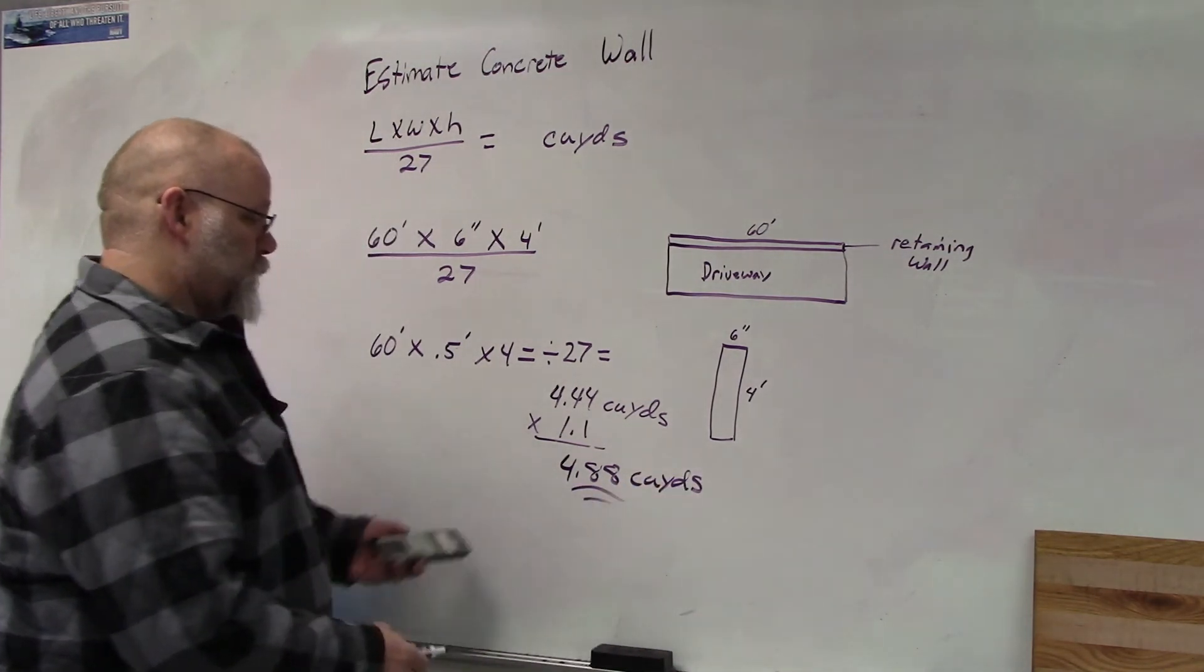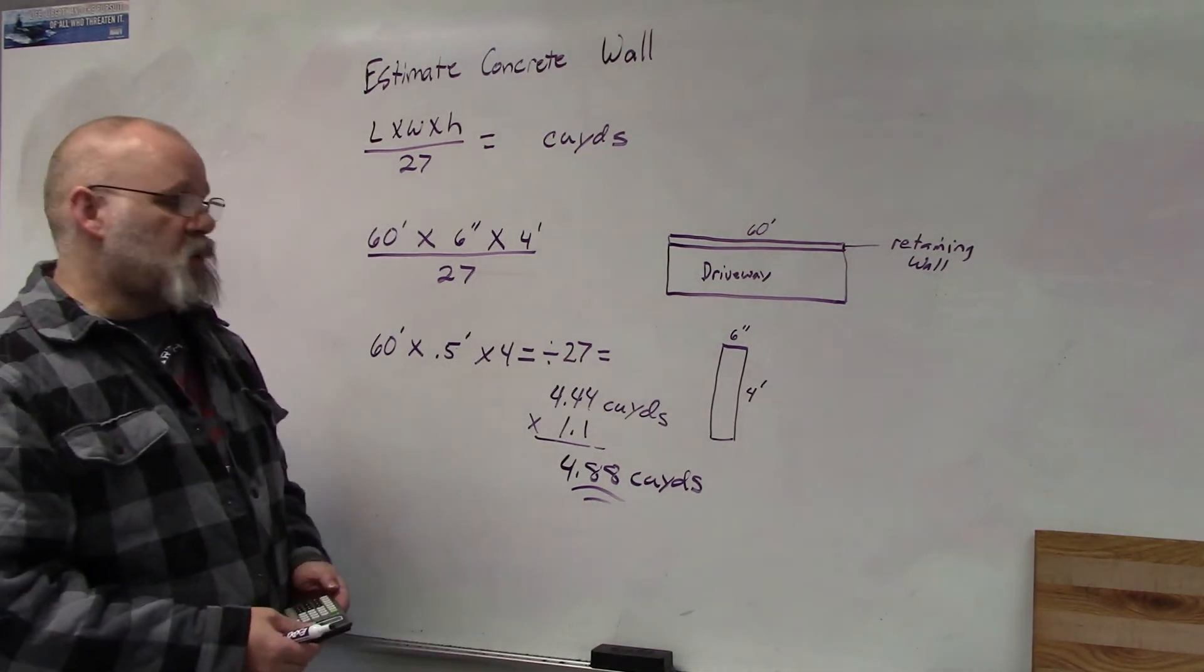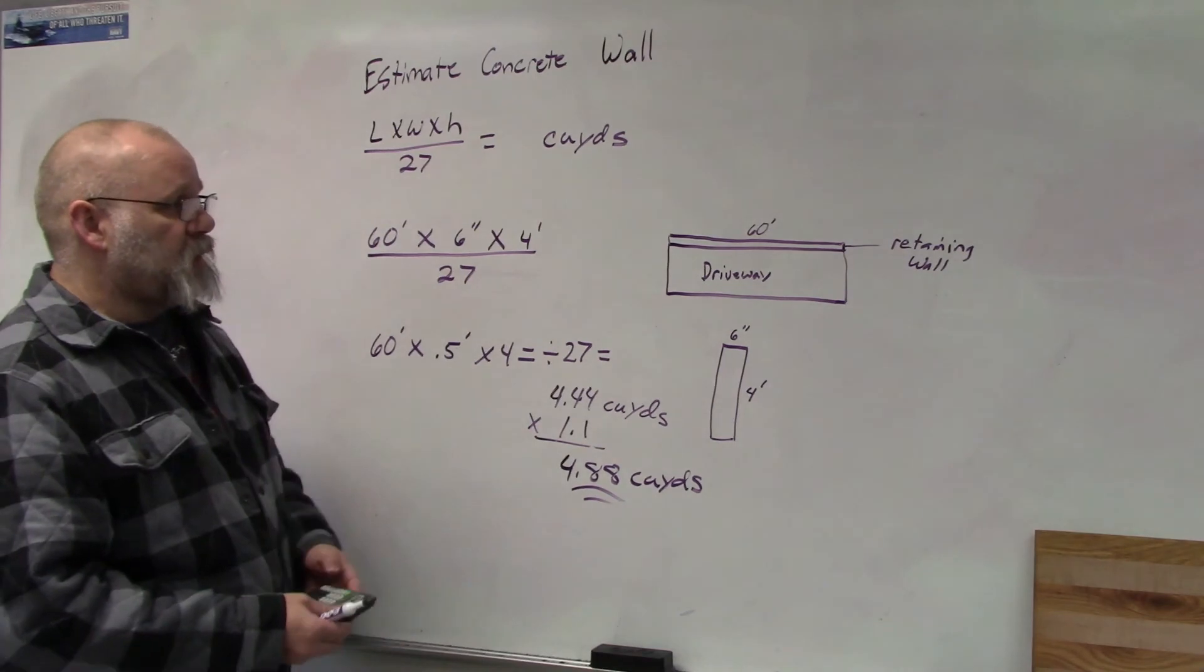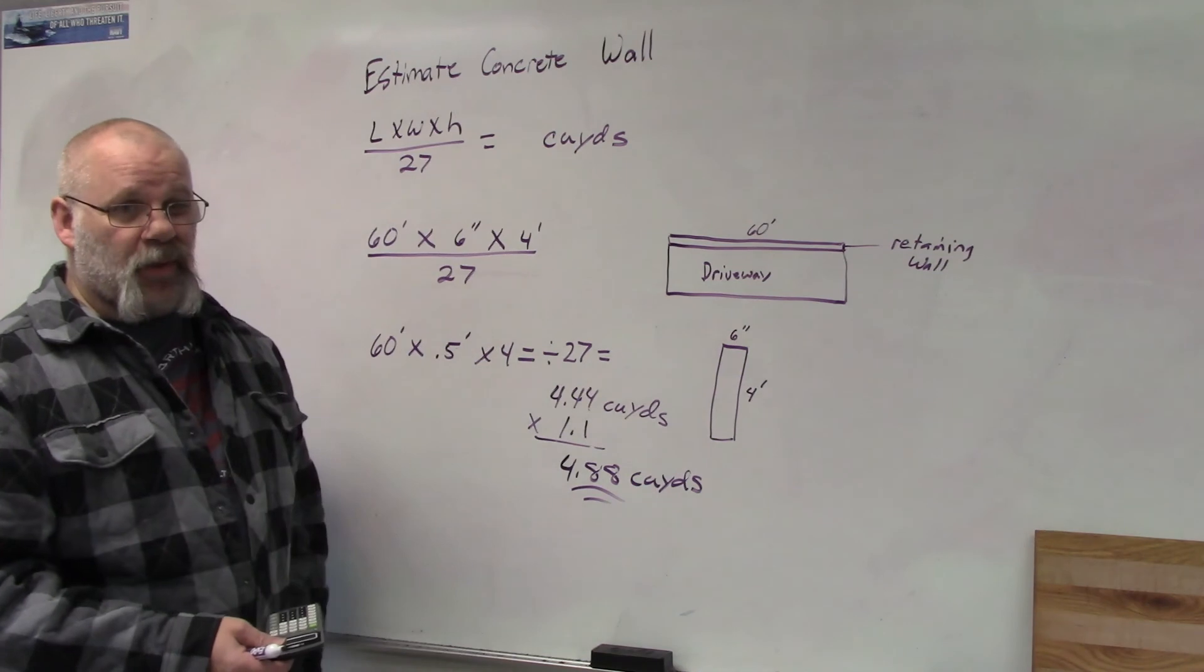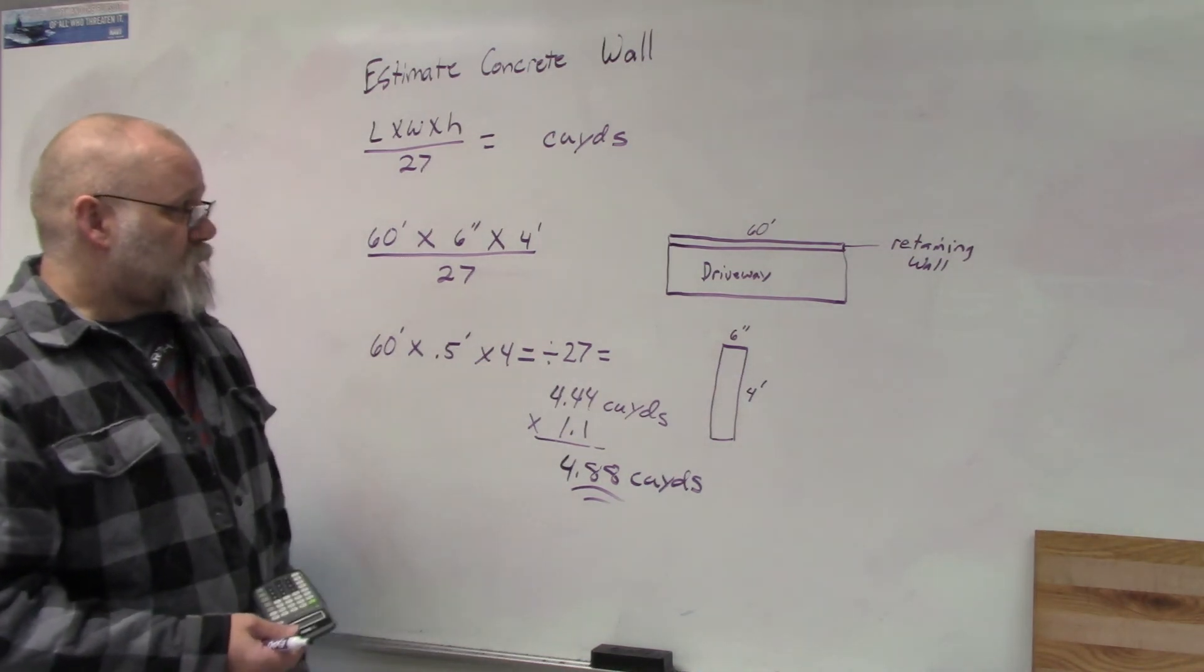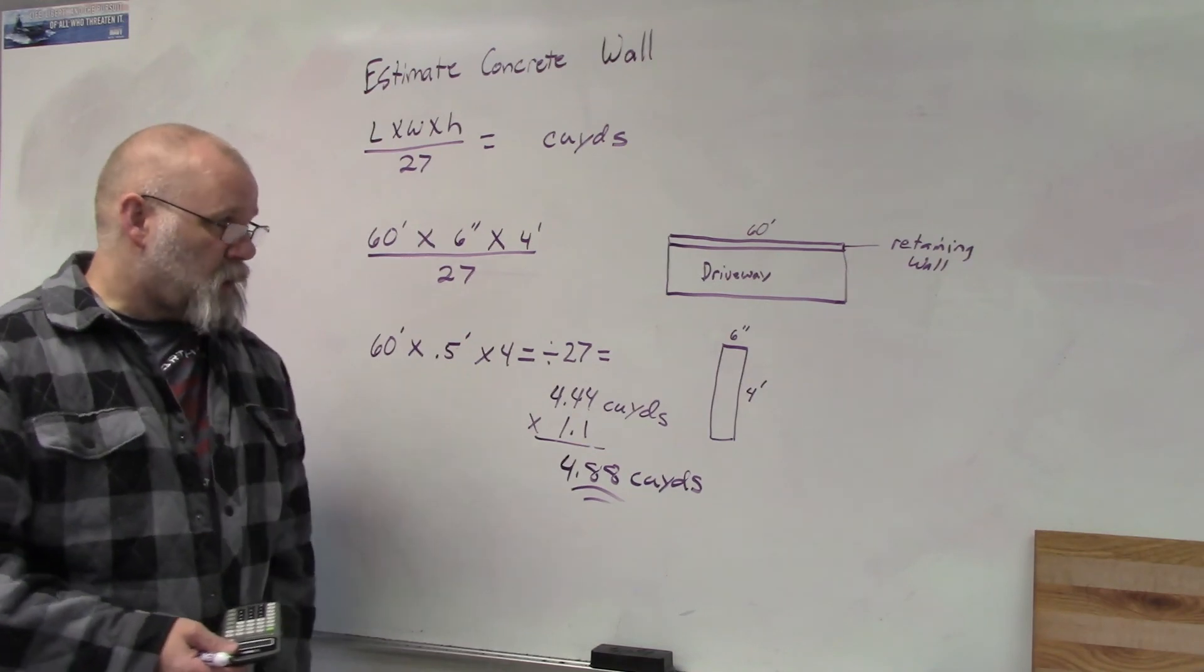Okay, again they'd probably round that up to five and order five cubic yards to make sure that you have enough, because if anything spills that's only a little over a half a cubic yard to waste. So that's a wall.